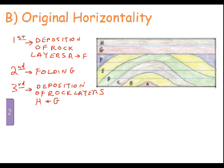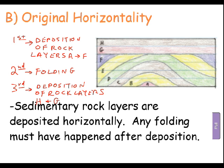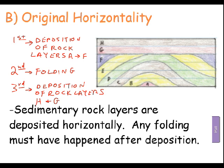Original horizontality lets us know that the folding must have happened before layers G and H were deposited. Why weren't G and H folded? Because they weren't there to get folded. At the time layers A through F were folded, G and H just didn't exist yet. So if they weren't there to get folded, they must be younger. Sedimentary rock layers are deposited horizontally to begin with, and any folding must have happened after deposition.